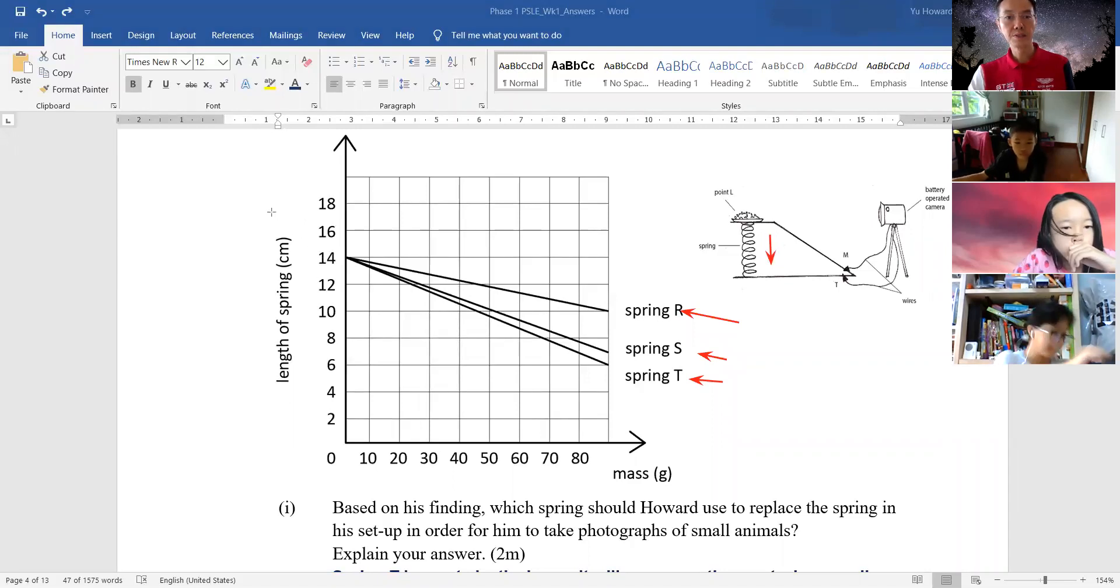To understand, you see here, all started at the same original length, right? Which is 14cm. So in order to compare the elasticity, you just choose any mass. But this is mass, right? So let's say we take this value here, 80. So at 80g, or maybe at 40g, you can see.